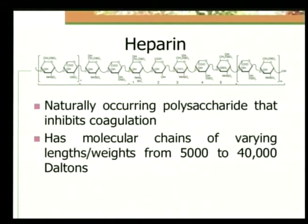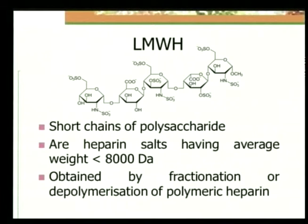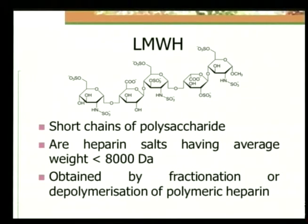Heparin is a naturally occurring polysaccharide that inhibits coagulation. It has molecular chains of varying lengths and weights, ranging from 5,000 to 40,000 daltons. Low molecular weight heparin is formed by snipping small fragments of the larger molecule — they are shorter chains of the polysaccharide, having average weights of less than 8,000 daltons. The advantages of low molecular weight heparin over conventional heparin are two: ease of administration via a subcutaneous route — patients can be taught to self-inject — and the daily dose, as heparin needs to be taken up to four times a day while low molecular weight heparin can be given just once a day.